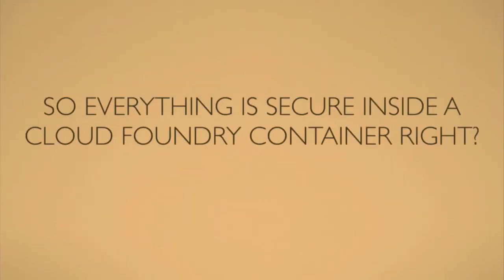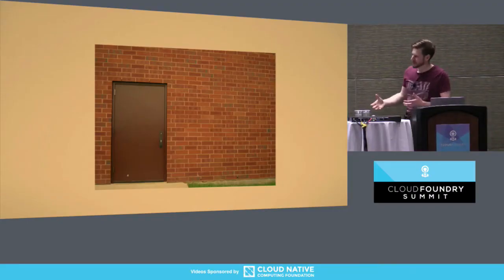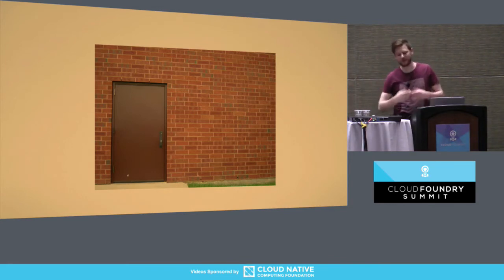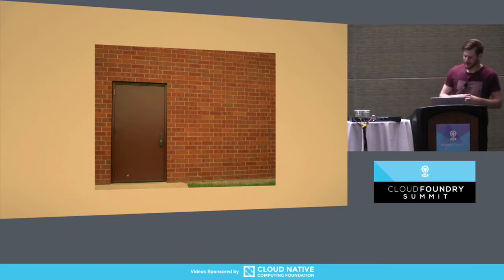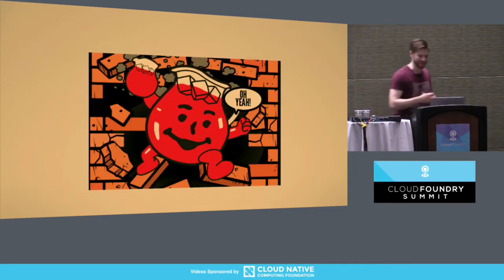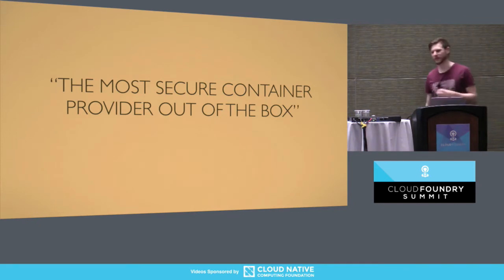So everything is secure inside a Cloud Foundry container, right? Well, yes — hopefully. But we also need to start thinking about the piece that orchestrates it: the Garden server. If you've got a door that looks pretty secure and treat it as the container — you barge against it and don't get anywhere — you start thinking, what else can I do? And you look at the wall, and if a glass jug of Kool-Aid can smash through that wall, well, you need to work on your security. We've done a lot of work on securing the containers themselves, but now we need to secure the piece that orchestrates it. That brings me to the real purpose of this talk: the root to rootless.